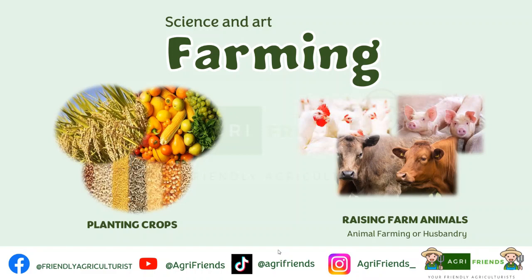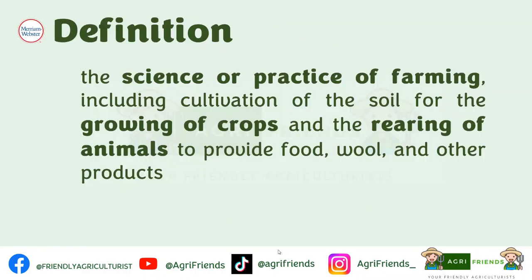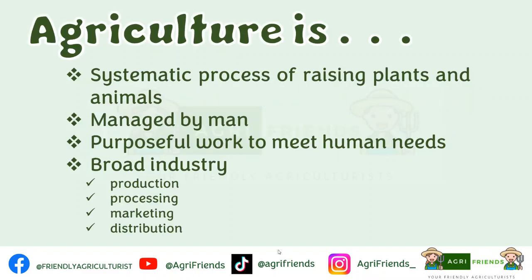The more complex definition of agriculture can be found in the Merriam-Webster Dictionary. There, they define agriculture as the science or practice of farming, including cultivation of the soil for the growing of crops and the rearing of animals to provide food, wool, and other products. Agriculture is also defined as the systematic raising of useful plants and livestock under the management of man.